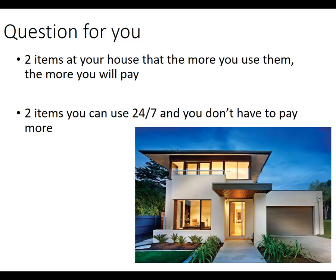Here's a question: name two items in your house where the more you use them, the more you pay — some bill goes up — and two items you could use 24/7 and not pay any more. Anything plugged into the wall or anything that uses water: the more you flush the toilet, the water bill goes up; the more you watch TV, the electric bill goes up. Two items you could use over and over again without paying more would be things like the couch, any chair, pictures on the wall, utensils, TV trays — anything that doesn't use electricity or water. You could use it or not use it at all, and what you paid for it doesn't change one bit.